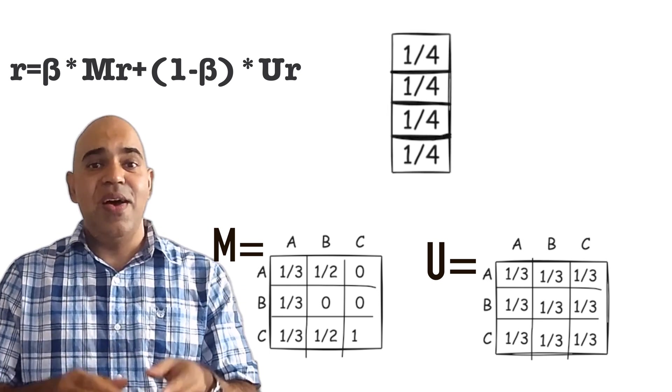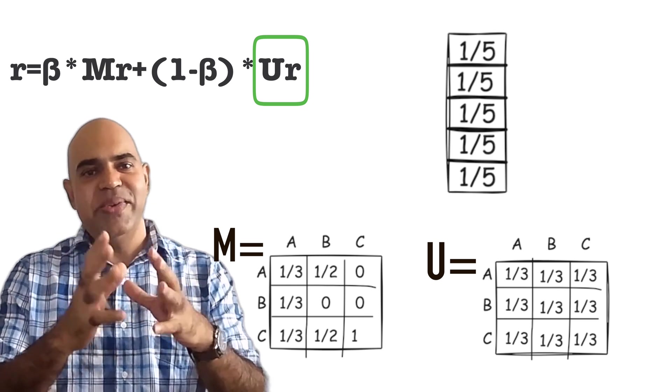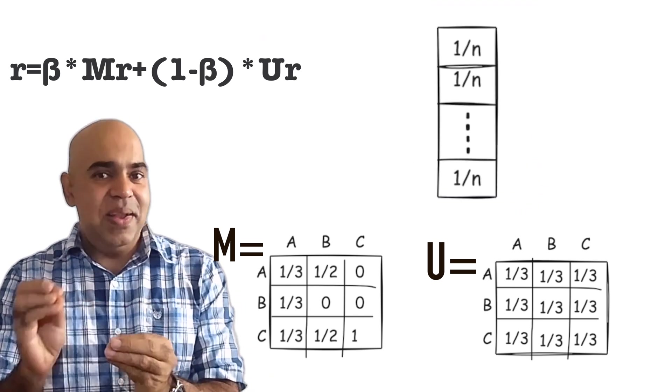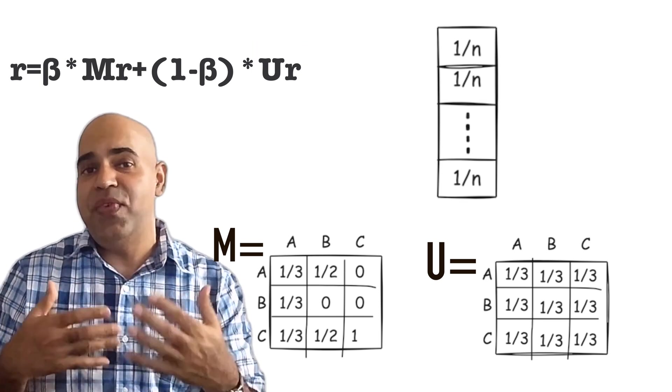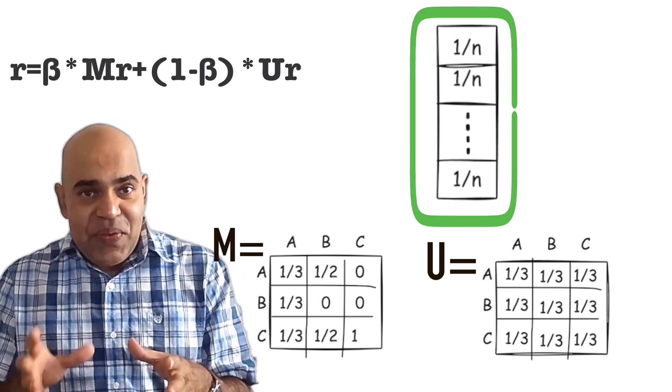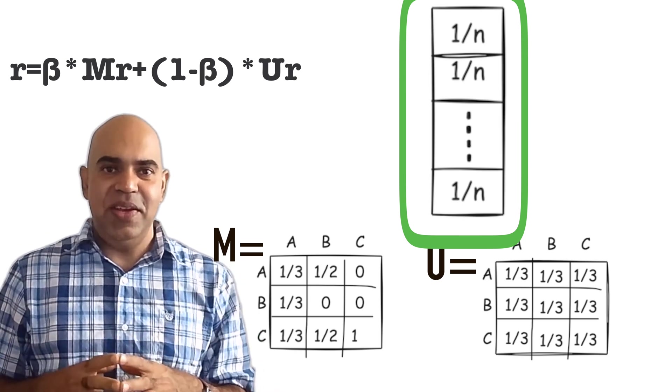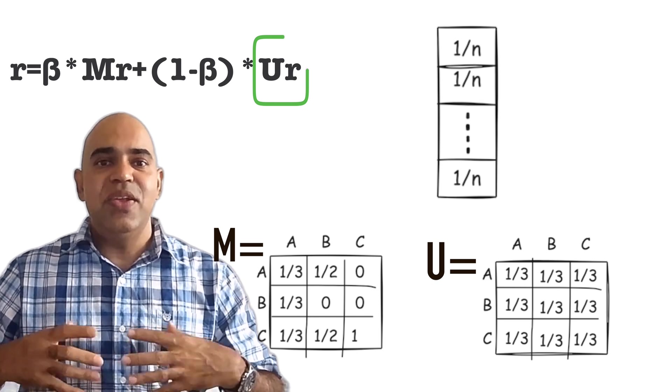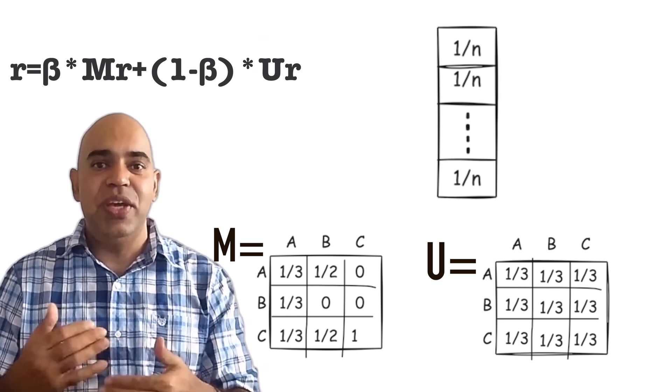For an internet of 5 websites, U times R will always be this. So and so forth. Hence, the multiplication U times R in every iteration is redundant. We could just create a uniform rank vector for the entire internet before starting any iteration and place it here in the formula instead of doing the multiplication again and again in each iteration.